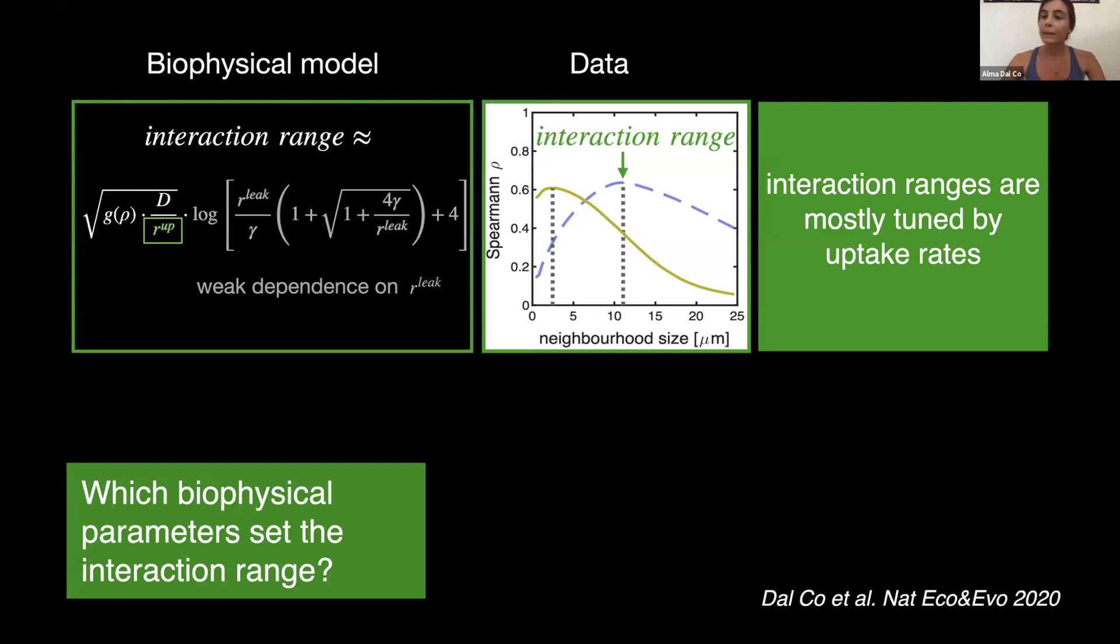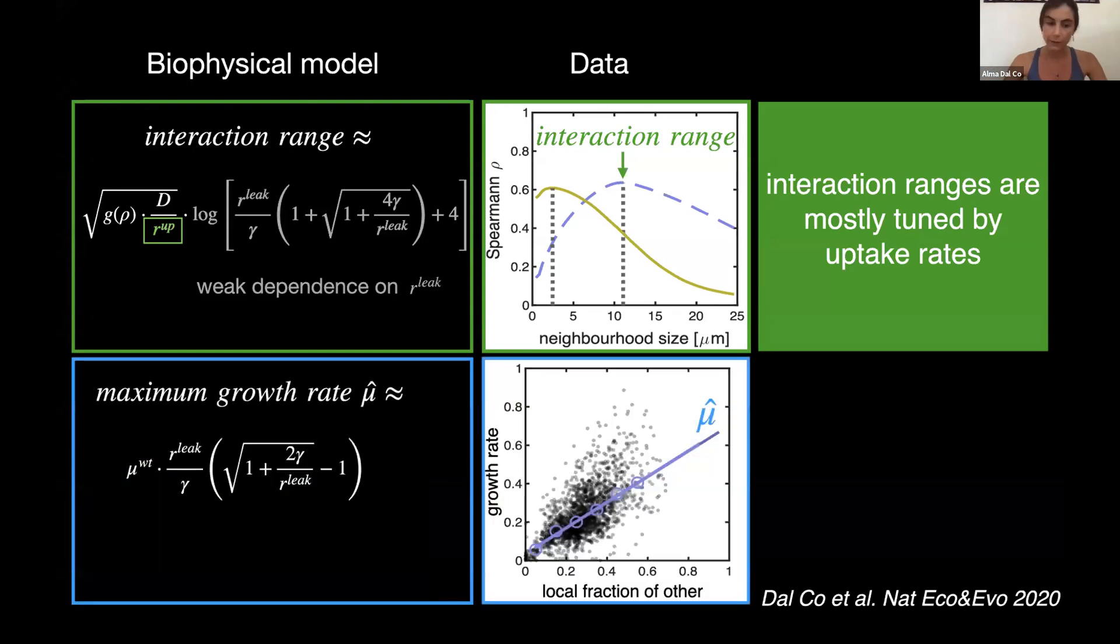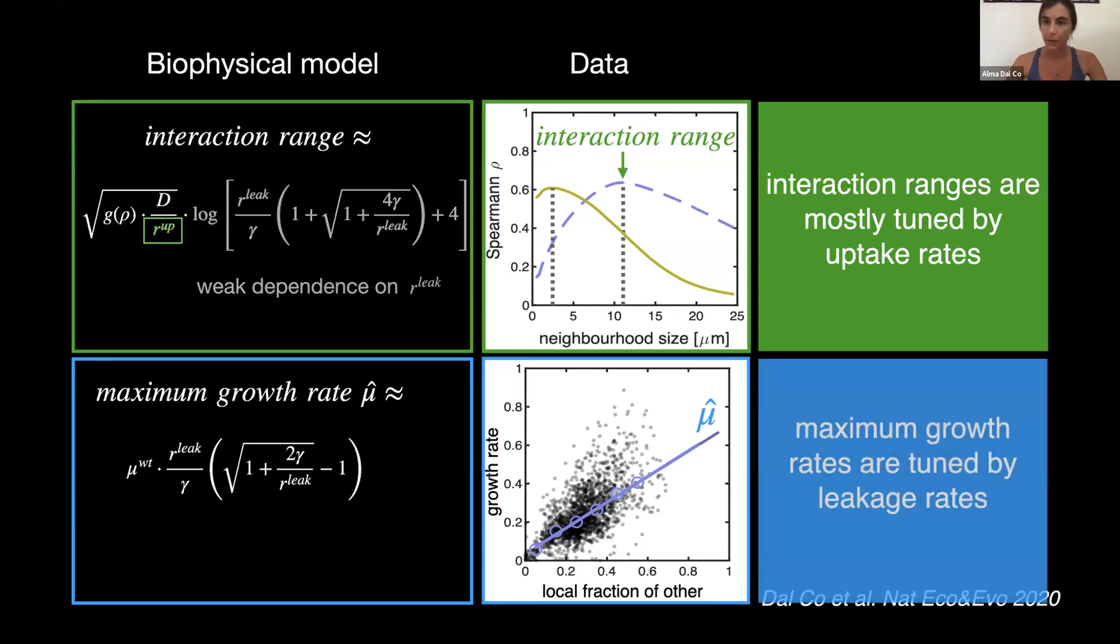Now, within this range set by the uptake rates, cells are sensitive to the local composition of this neighborhood. And the more they find the partner type within this neighborhood, the faster they grow. And we can also predict the fastest growth rate they can achieve using our individual-based model. And we find that this growth rate mostly depends on the leakage of amino acids. So we find that the interaction range and the maximum growth rate are tuned independently.